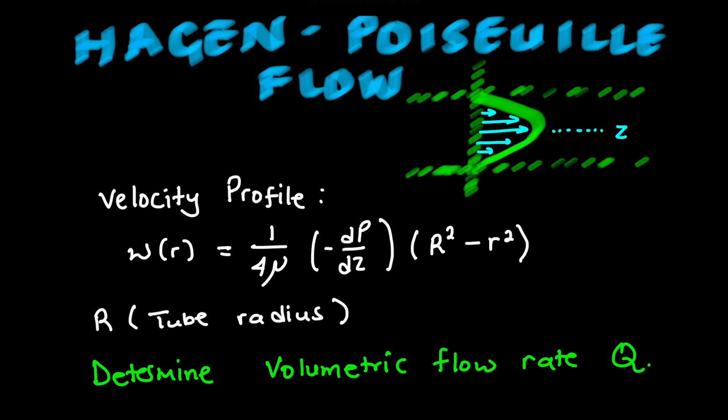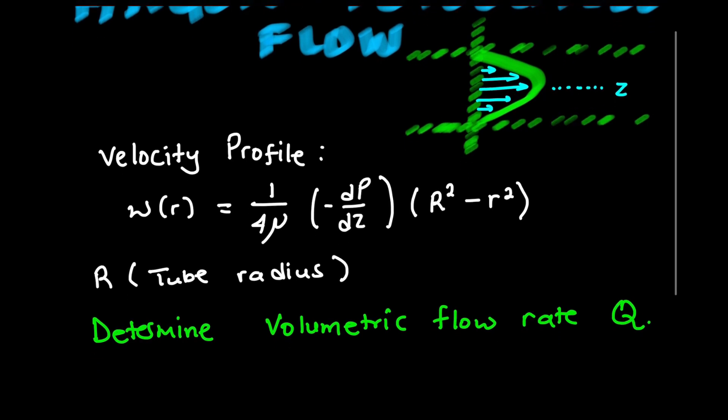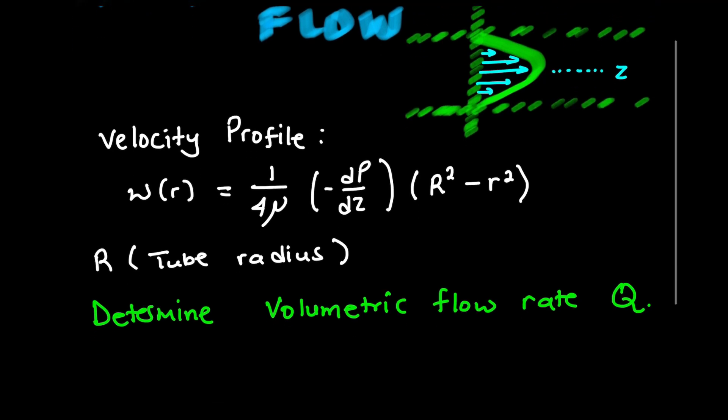We are also given the velocity profile, and I've drawn a diagram here which is going to assist us. The volumetric flow rate is velocity multiplied by area, so let's dive right into it.